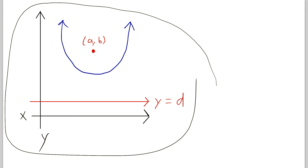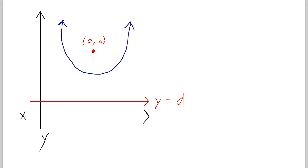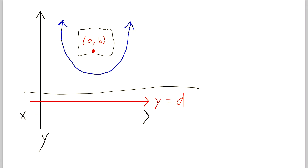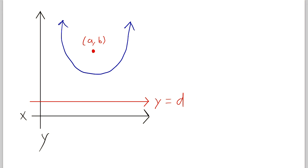We've got our parabola here. So just as a quick refresh, a definition of a parabola is the set of all points equidistant to some given point called the focus and some given line called the directrix. And knowing that information, we can find the equation for a parabola given the focus and the directrix.